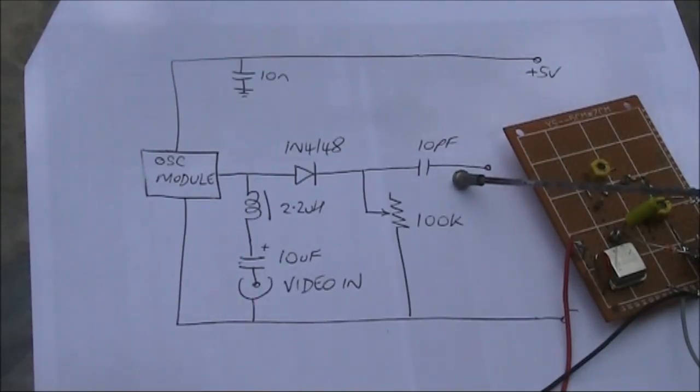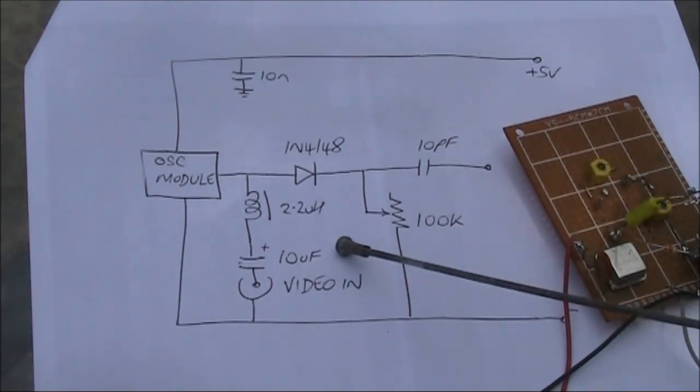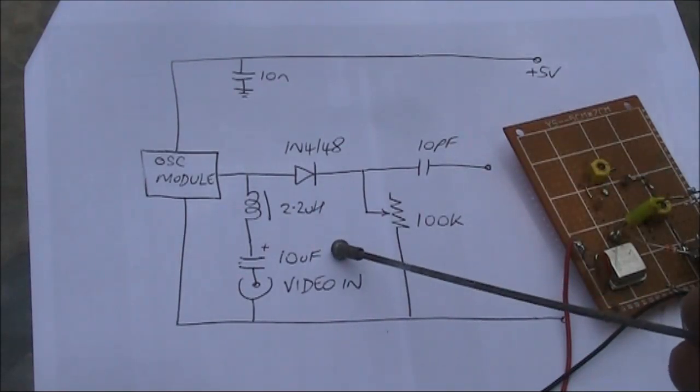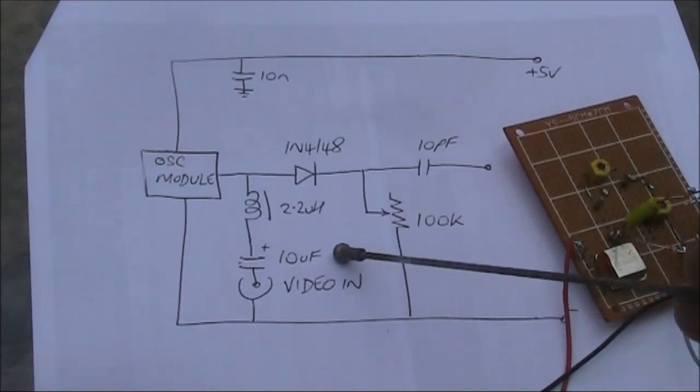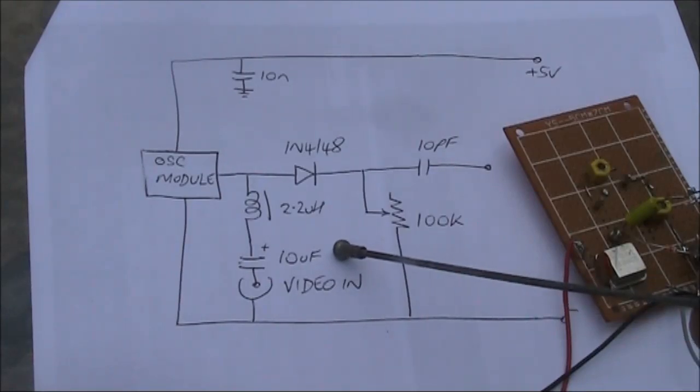I haven't added a tuned circuit yet, so it's rich in harmonics. I was able to get a good picture from the video camera without the 10 microfarad capacitor here, but with the DVD player I needed it in. That provides some DC isolation.